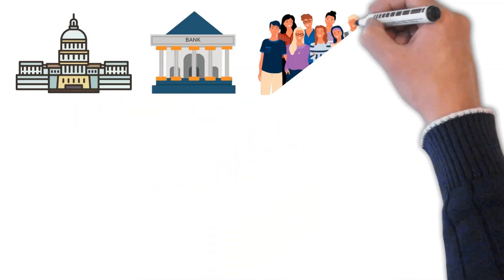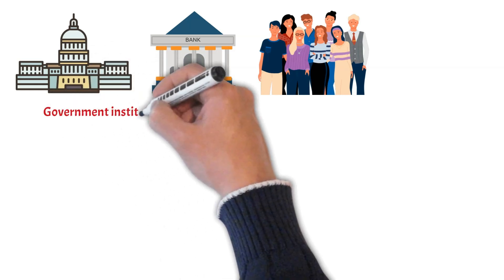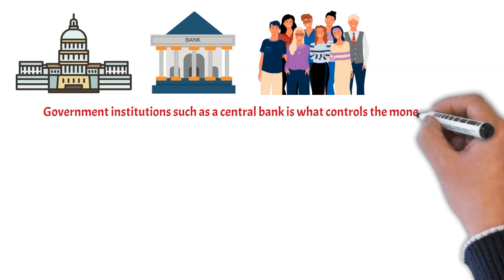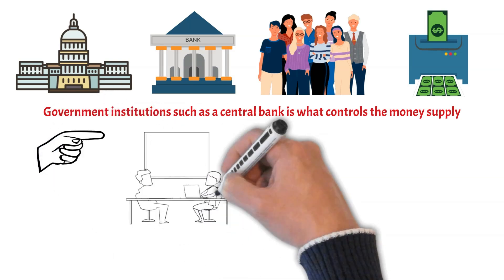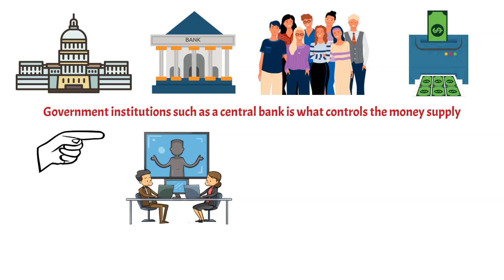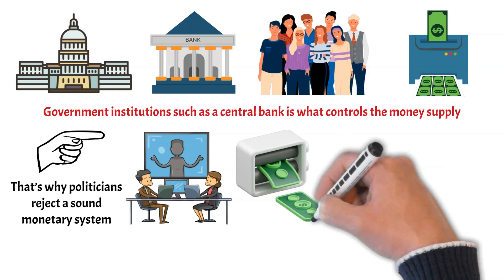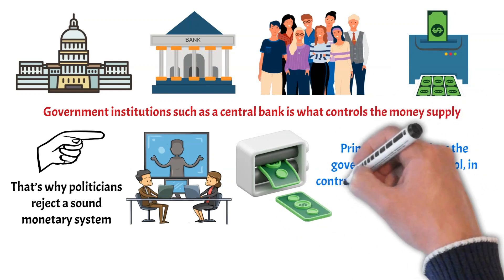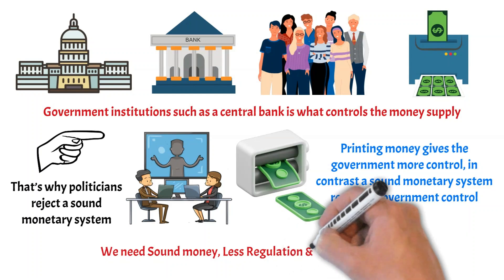The government and central bankers want people to believe that inflation is the rate at which prices increase over time — this is a lie, because government institutions such as a central bank control the money supply. Central banks claim to be independent from government, but they are not. Politicians point the finger at capitalism, blame rich people and entrepreneurs — that's how they win votes, and why politicians reject a sound monetary system. Printing money gives the government more control. In contrast, a sound monetary system restricts government control and provides a stable foundation for economic growth. That is why we need sound money, less regulation, and less government.